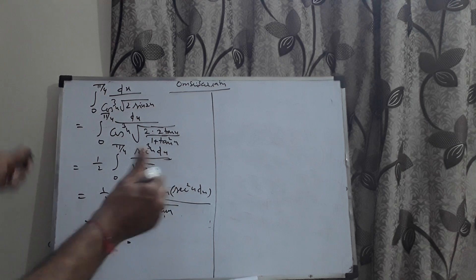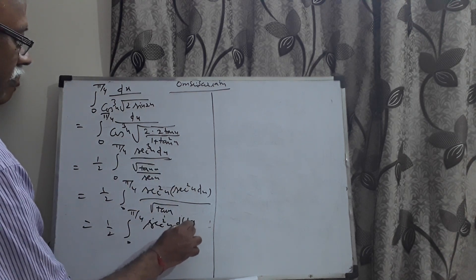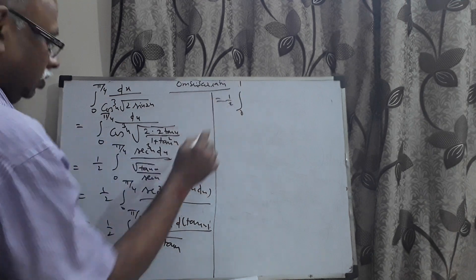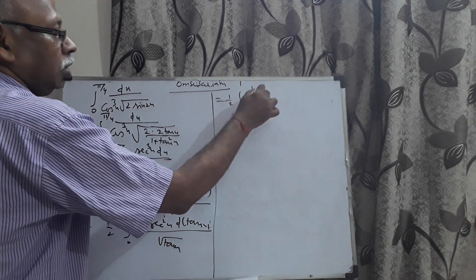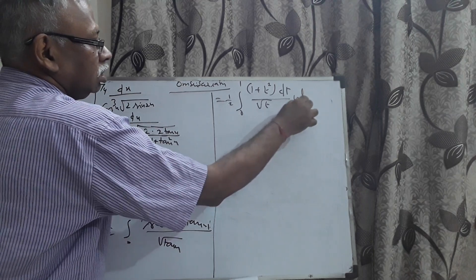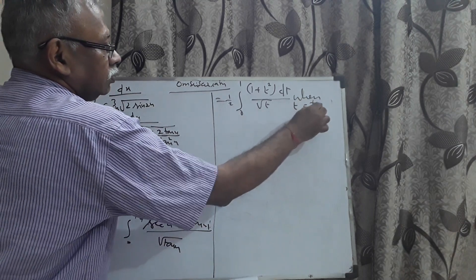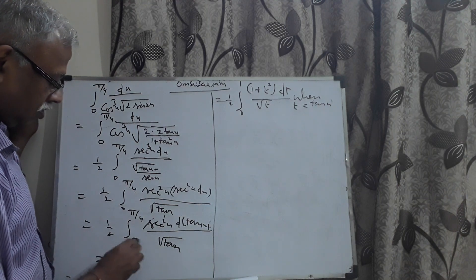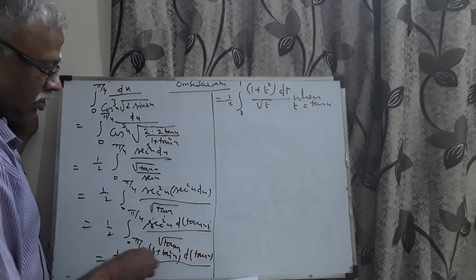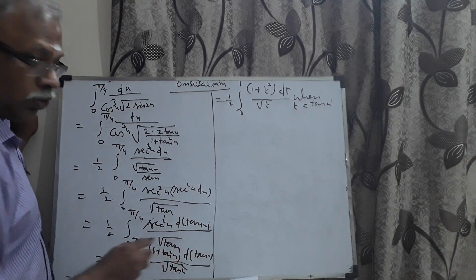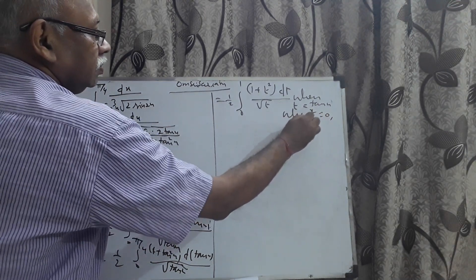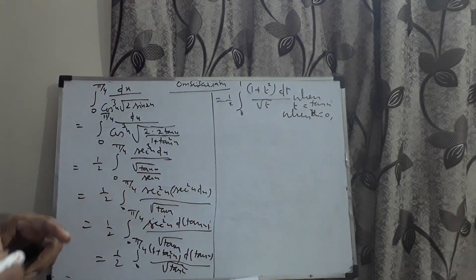Writing sec²x = 1 + tan²x, this becomes (1/2)∫₀^(π/4) (1 + tan²x) · d(tanx) / √(tanx). Now I use the substitution t = tanx. When x = 0, t = tan0 = 0. When x = π/4, t = tan(π/4) = 1. So the integral becomes (1/2)∫₀¹ (1 + t²) dt / √t.